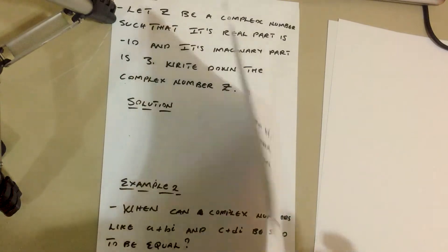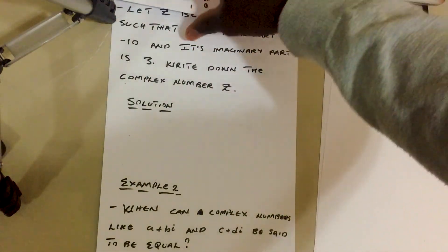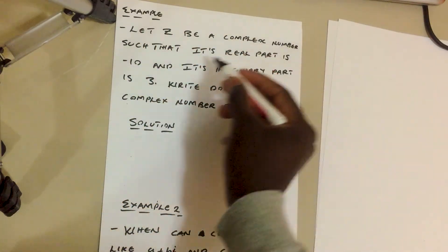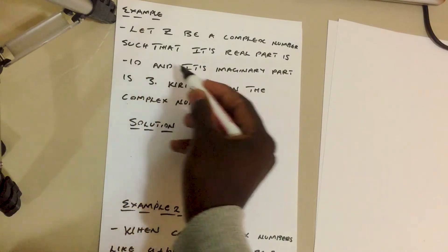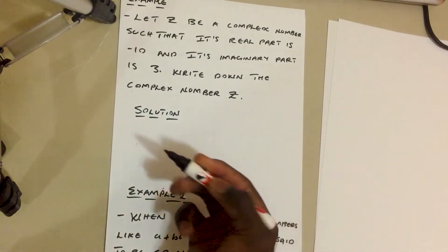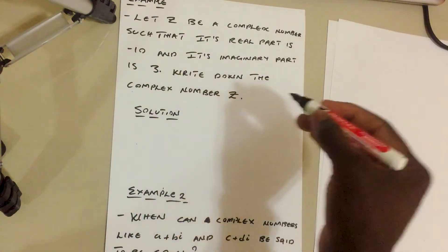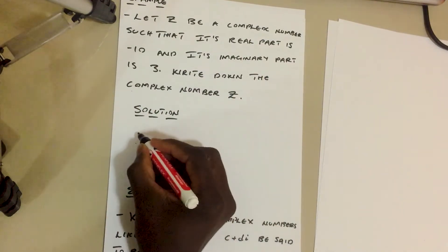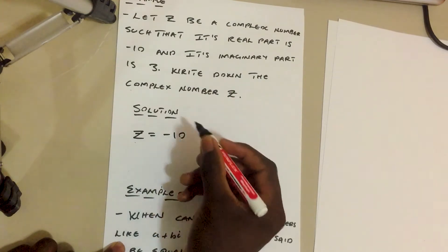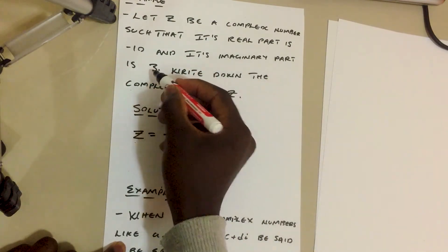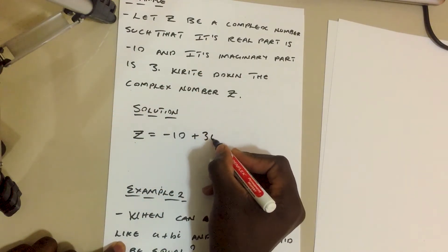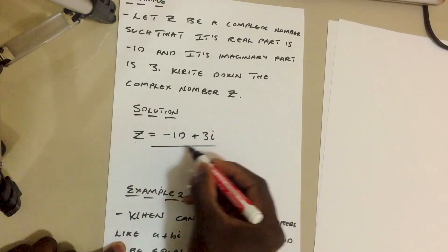Here's an example to help us understand complex numbers further. Let z be a complex number such that its real part is negative 10 and its imaginary part is 3. Write down the complex number z. Since the real part is negative 10, we write z equals negative 10, and since the imaginary part is positive 3, we add plus 3i.